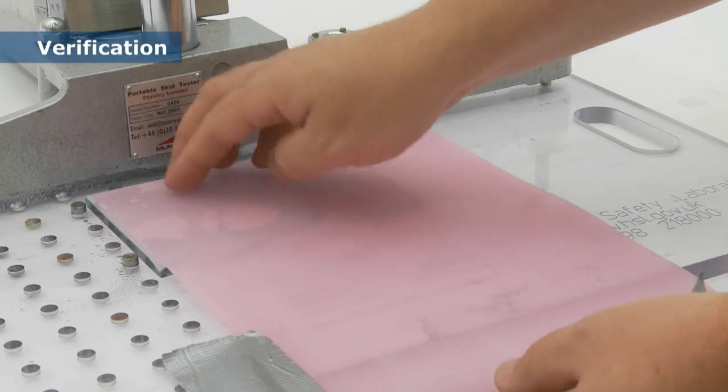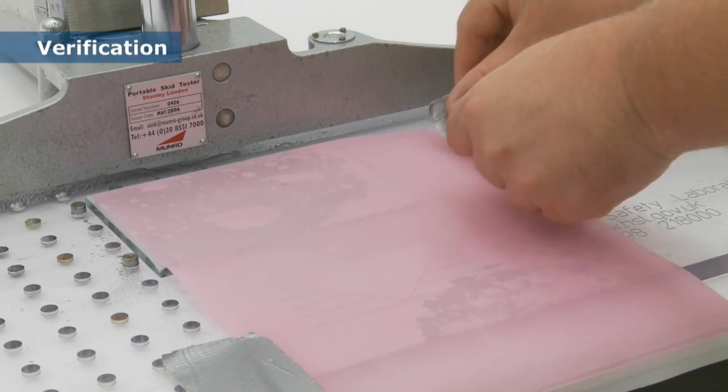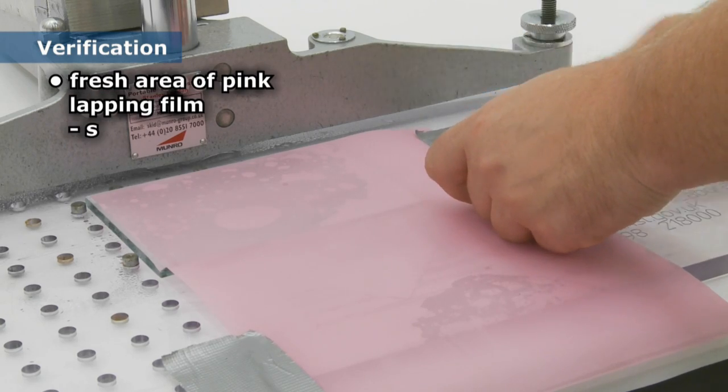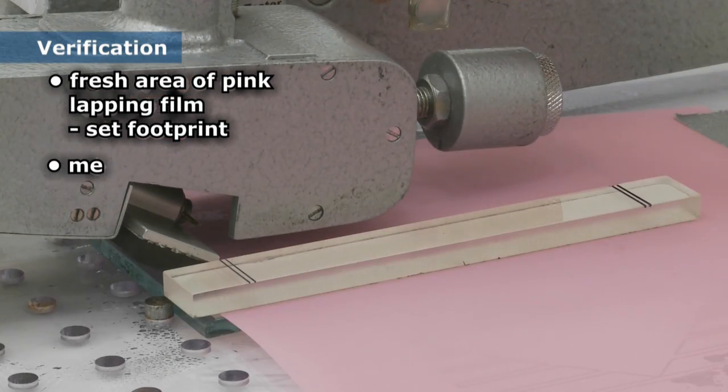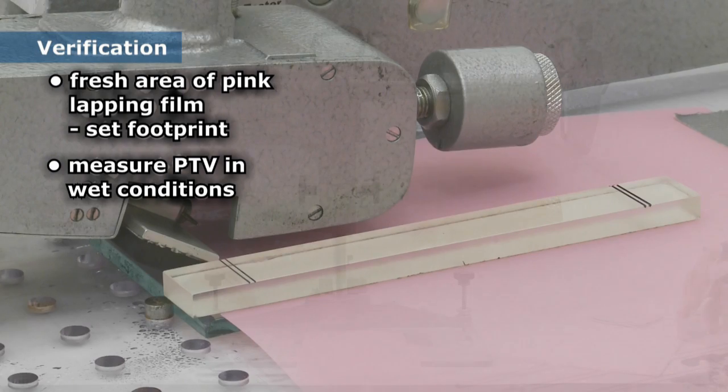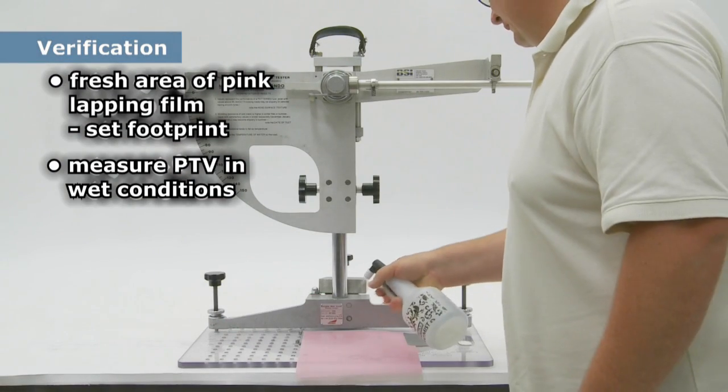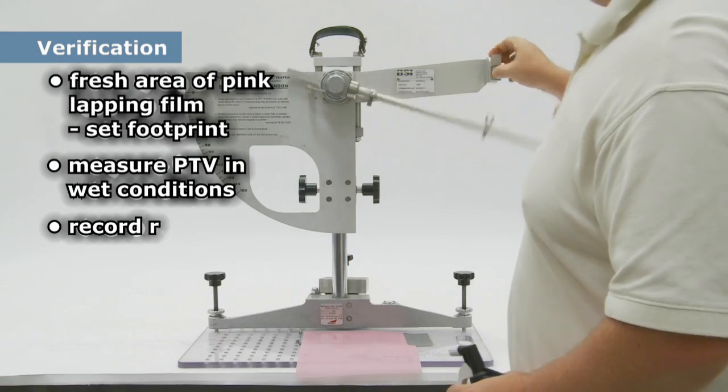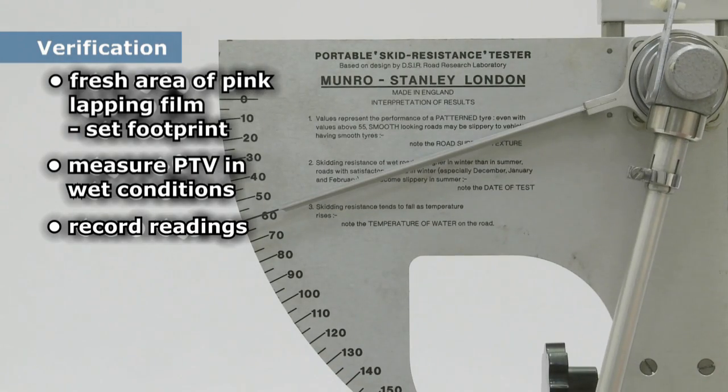We now move from preparation to verification. Using a fresh area of pink lapping film, set the footprint and measure the pendulum test value or PTV in wet conditions. Make a record of the readings.